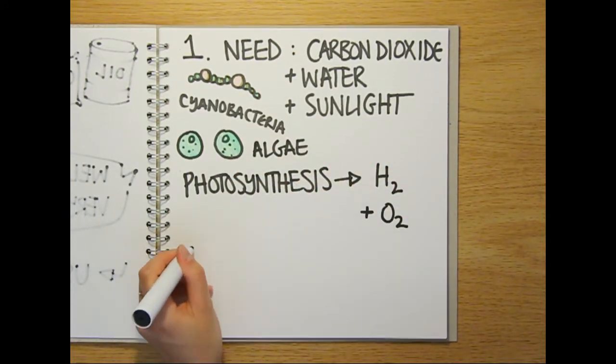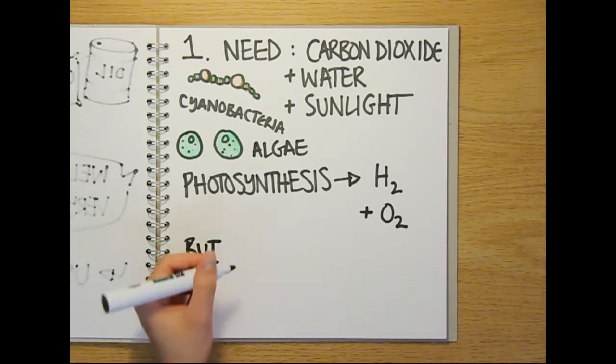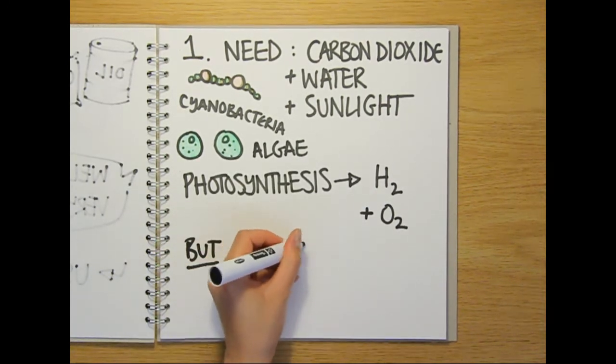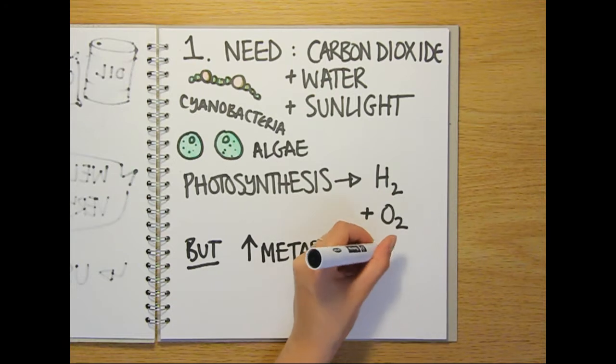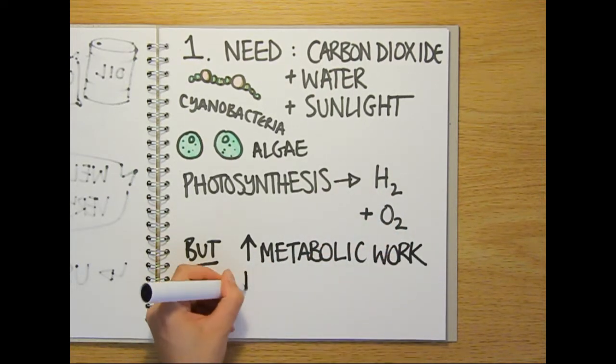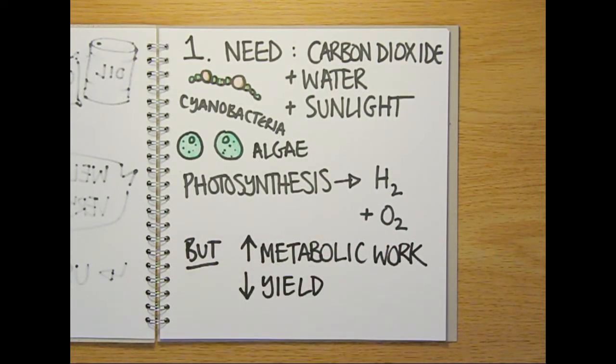The problem with this method of biohydrogen production though is that the cells have to do a lot of metabolic work to produce it. This means that you need a very large bioreactor to make just a small quantity of biofuel rather slowly.